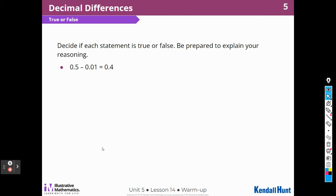Decide if each statement is true or false. Be prepared to explain your reasoning. 5 tenths minus 1 hundredth is 4 tenths. Let's think about that. These are not in the same place value, are they? If I use my strategy from last time, 5 tenths, and line up the decimal places, it's like saying 50 minus 1, that would be 49, not 4 tenths. So I'm going to say that this one is false.